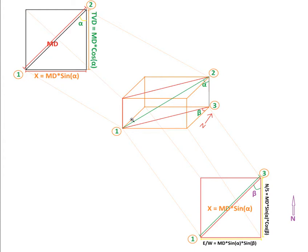This is the directional drilling survey calculation. Look at the figures carefully. Assume this is the area where we are drilling — there is a cube, and we drill from this point to this point, so this is our measure depth, line one to two. This rectangle is our vertical profile, or vertical cross-section. This is our inclination angle, which is the angle between the true vertical depth and the measure depth. This is our azimuth angle, which is with respect to north in the horizontal plane.